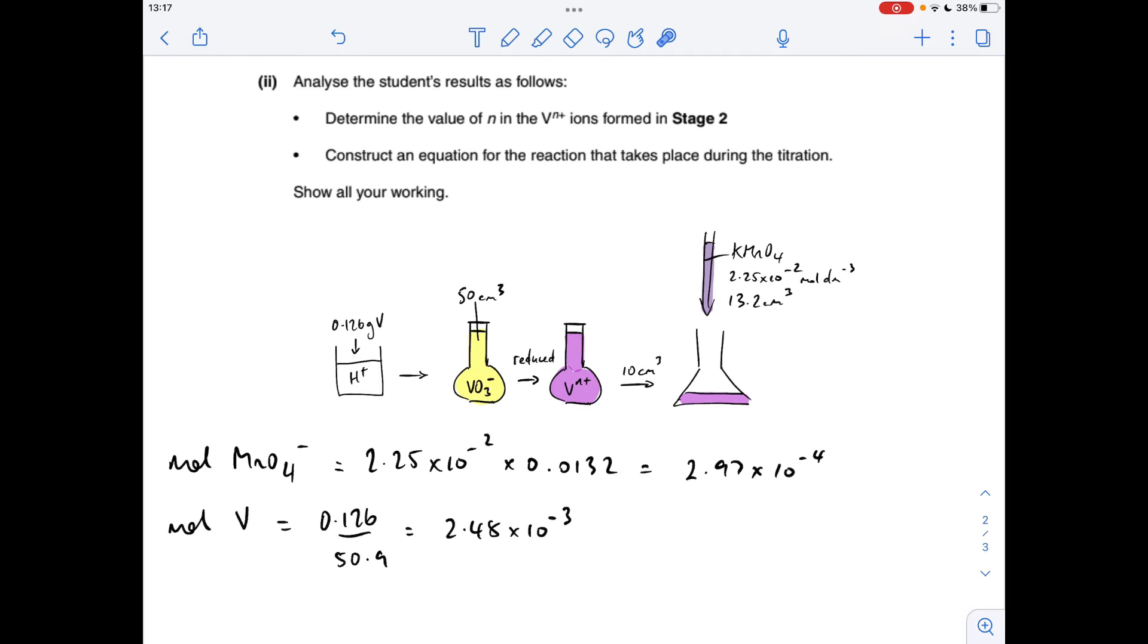For the moles of vanadium, it's mass over Mr, so 2.48 times 10 to the minus 3 moles of vanadium have gone into here. Therefore there's that many moles of VO3 minus ions, and therefore that many moles of V2+ ions. Then in the 10 centimeters cubed using the titration, that's obviously going to be a fifth because this is 50 cm cubed and that's only 10. So the moles of V2+ used in the titration in 10 cm cubed is 4.95 times 10 to the minus 4.